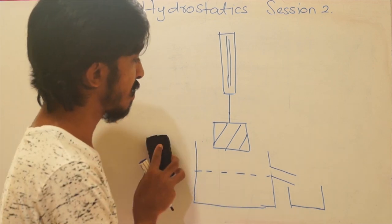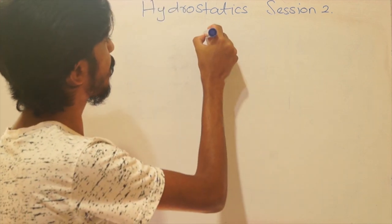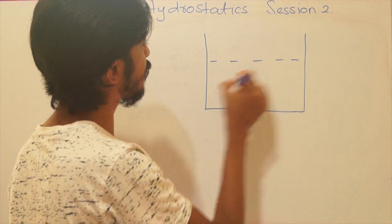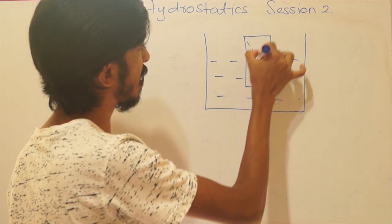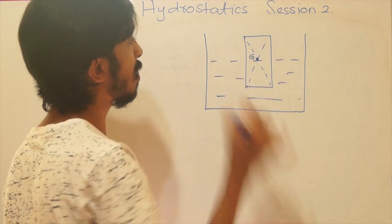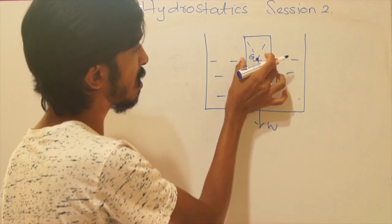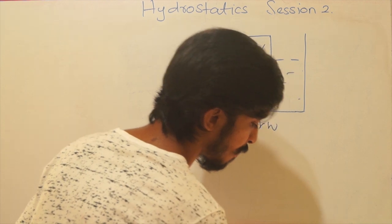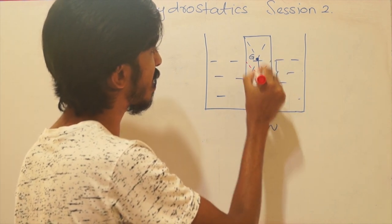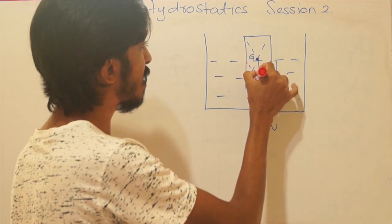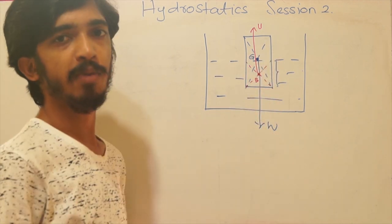The centre of buoyancy B is the point through which the upthrust acts. It is the centroid of the immersed portion of the object. When an object floats partially, the centre of gravity G is along the symmetric axis and the centre of buoyancy B is the symmetric centre of only the immersed portion, which is where upthrust acts.